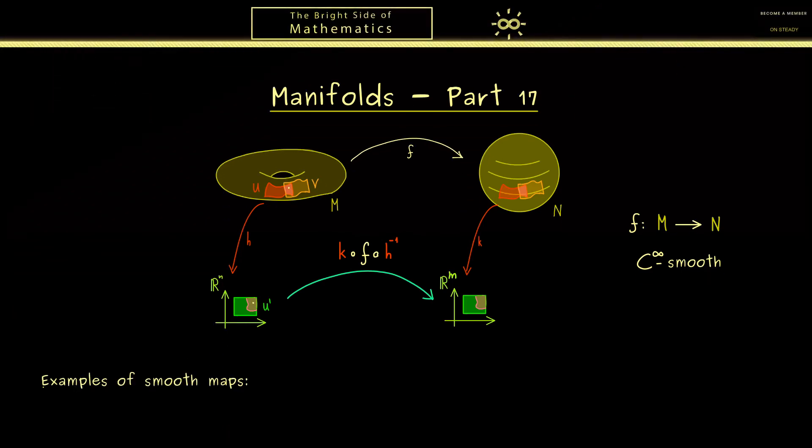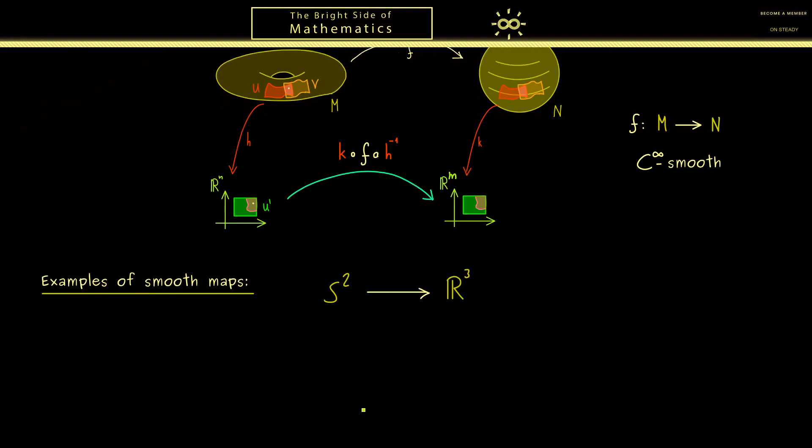This is not so complicated, because we already know some manifolds and now we just construct some maps and look if they are actually smooth. So let's start with a very common manifold, the two dimensional sphere S². And let's map this one into the three dimensional space R³. And there, you should know, we have immediately a very natural map, the inclusion map.